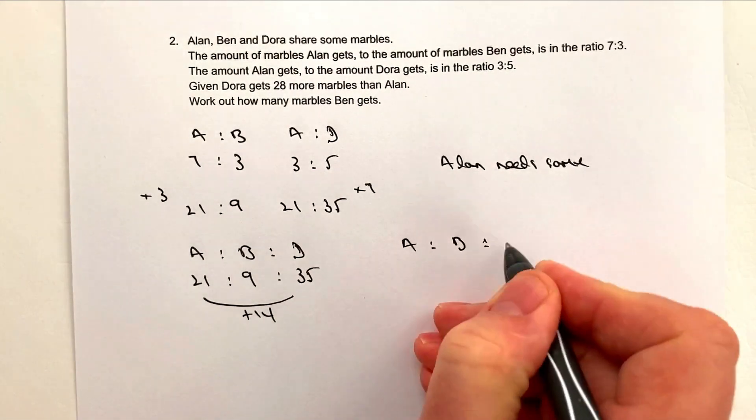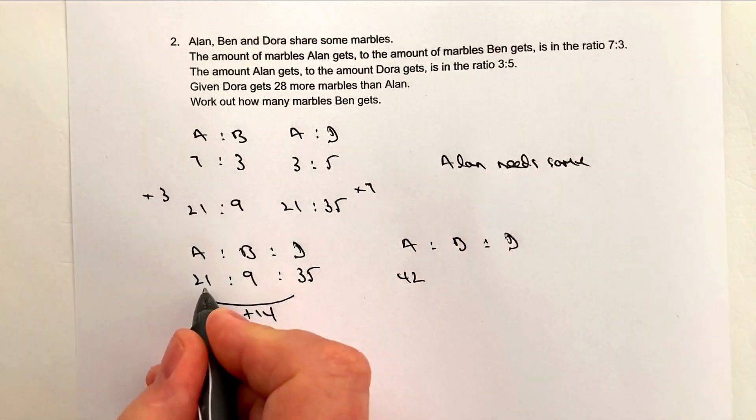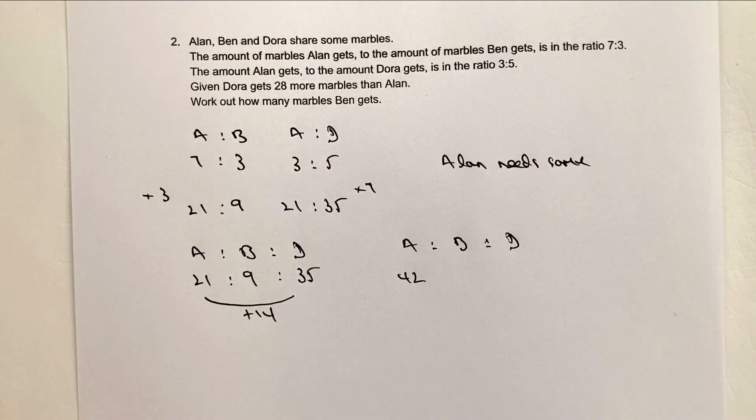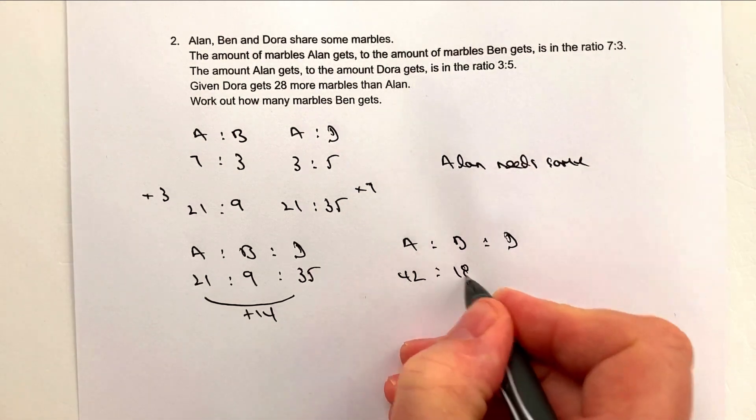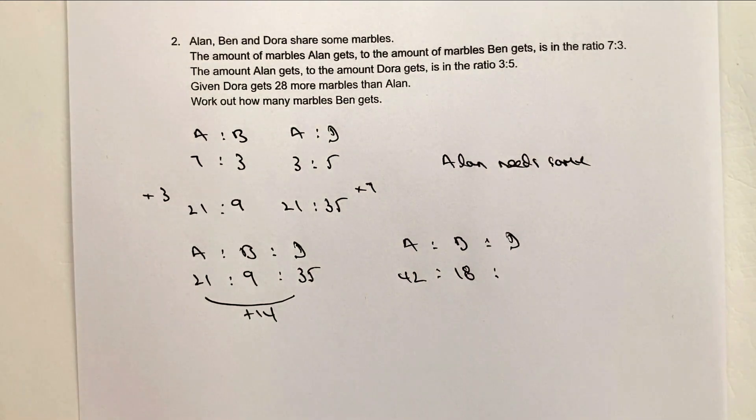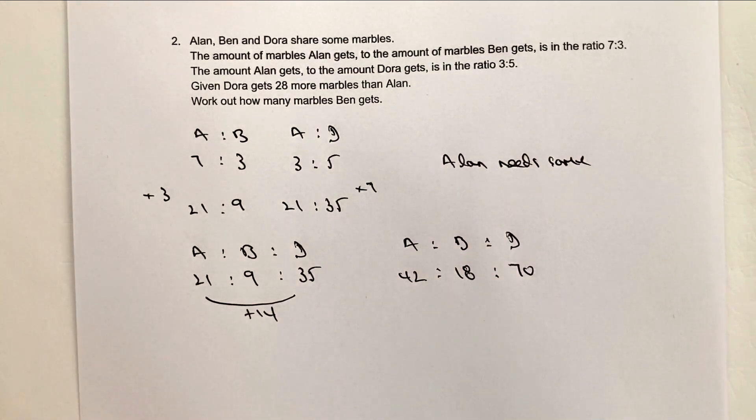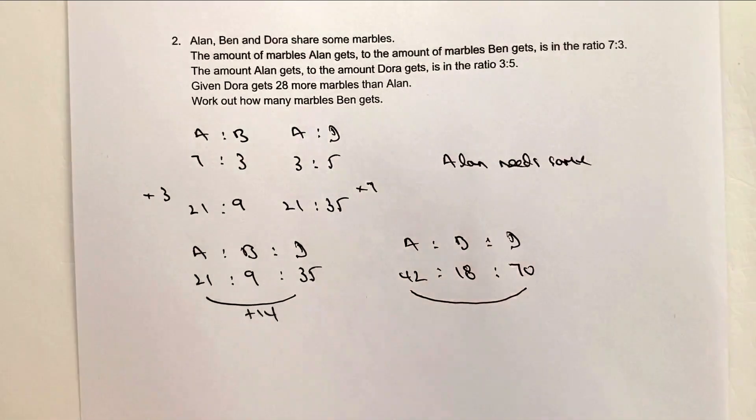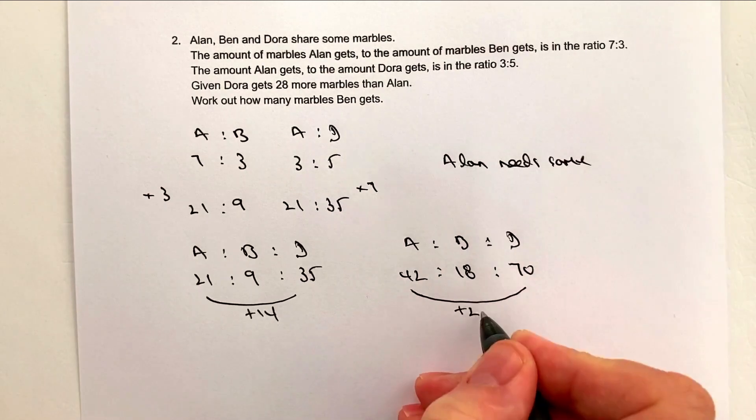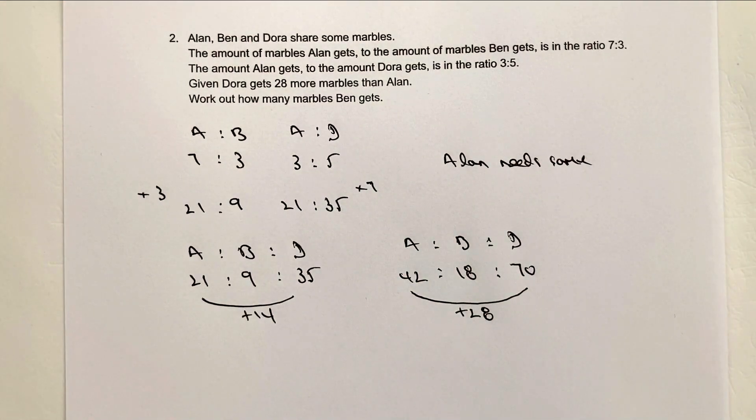So let's have a look at what happens there. So we've got Alan, Ben and Dora. Alan now is going to have 21 times 2, which is 42. Ben is going to have 9 times 2, which is 18. And Dora is going to have 35 times 2, which is 70. So in this particular case now, because we've multiplied everything by 2, Dora is going to get 28 more marbles than Alan, which meets that particular question.